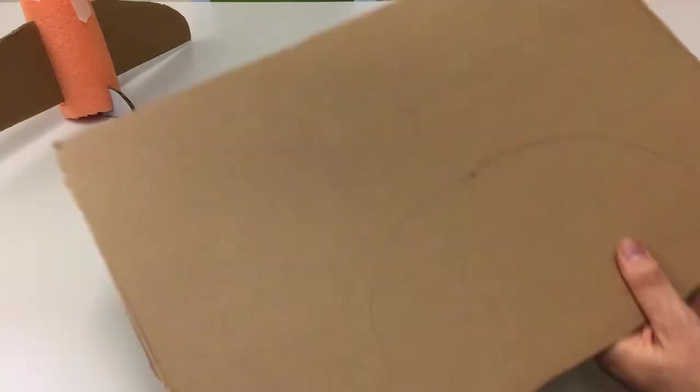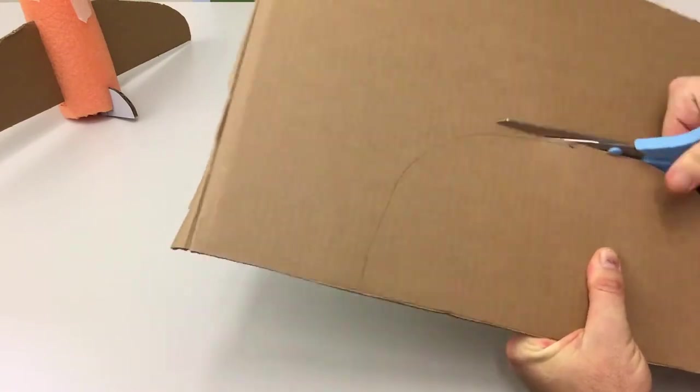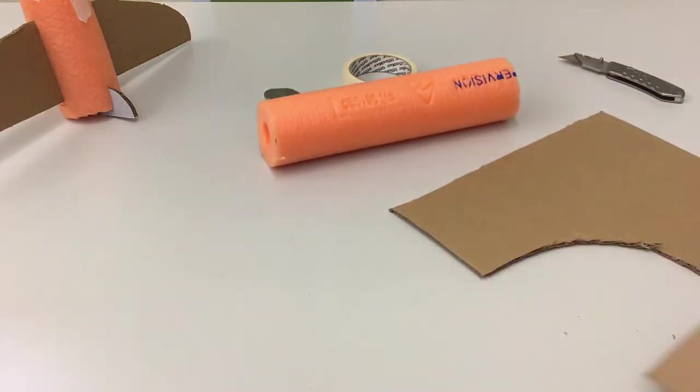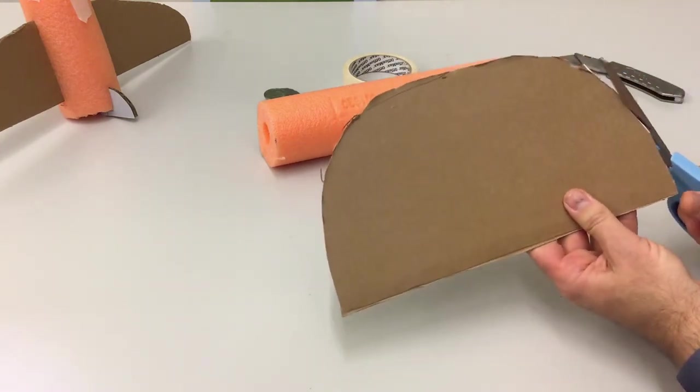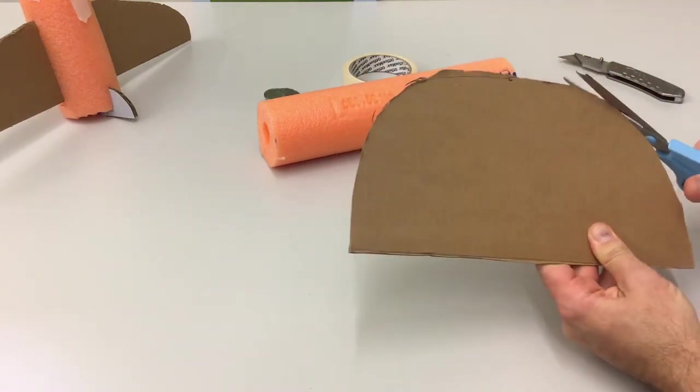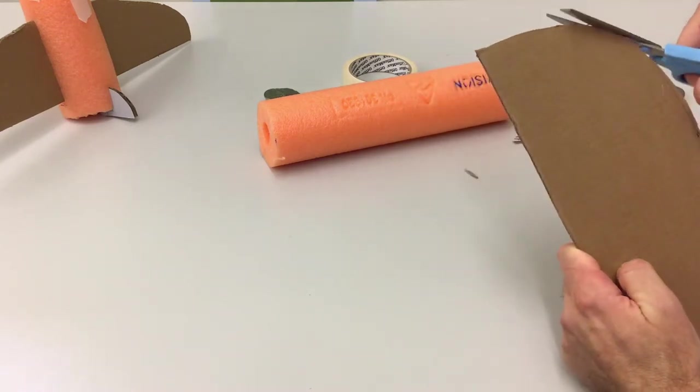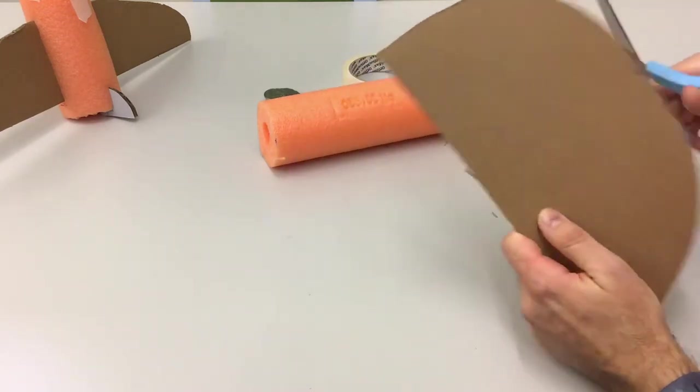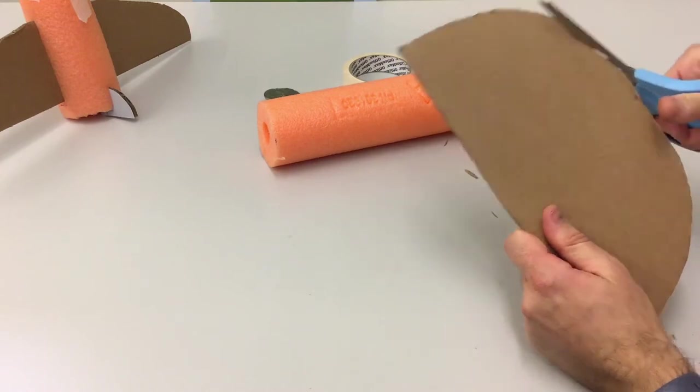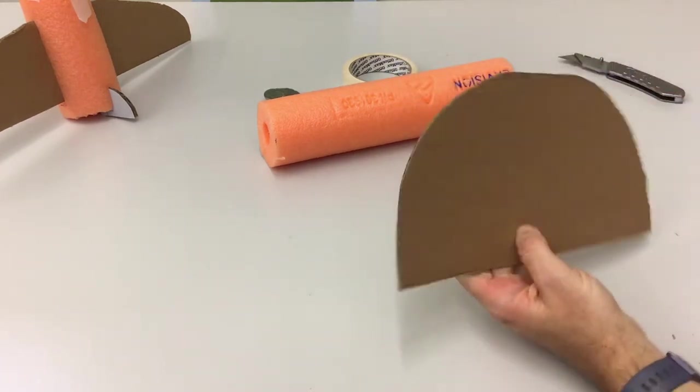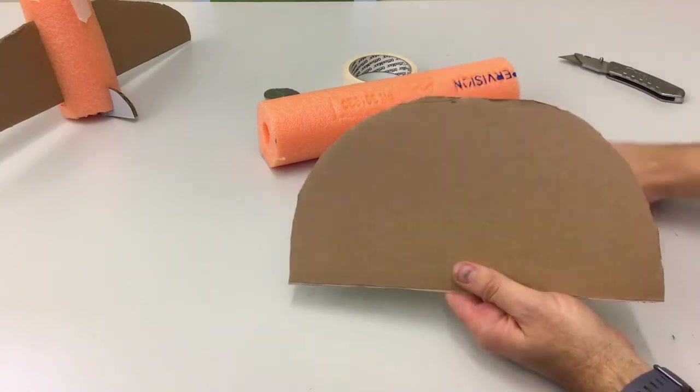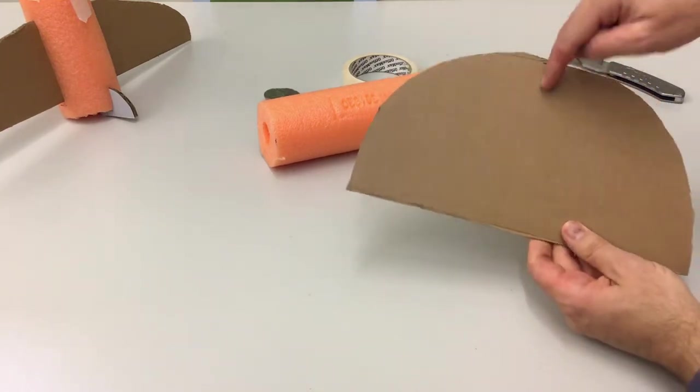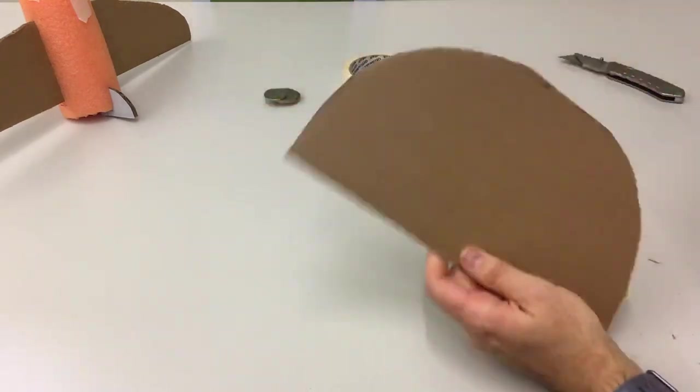Cut them out. I might just tidy that up a little bit. You want to try to get them as even as possible. You can fold it in half to make it more even, but just don't cut it down here - keep it in one solid piece.